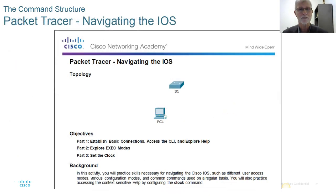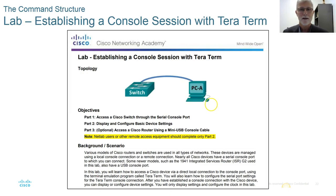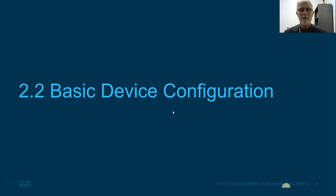There are Packet Tracer examples to navigate through for this chapter. I'll pick one of the labs to make a supplemental video. One lab covers IOS navigation and another covers establishing console connections. Since you're working with Packet Tracer, it's fairly straightforward — the basic configuration lab is probably where I'll focus.